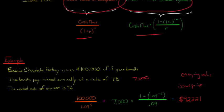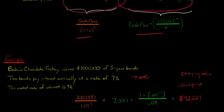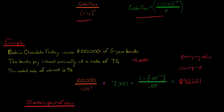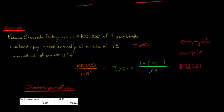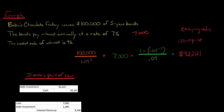But the carrying value is going to change over time, because this bond was issued at a discount. Because it's $100,000 face value, but the bond was issued for $92,221. So that difference, we are going to effectively amortize. Let me show you from the investor's point of view. So Babu is raising the money. Babu is issuing the debt. I want to show you the other side. Let's say your company buys these bonds from Babu.